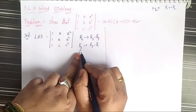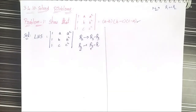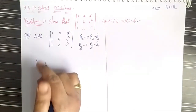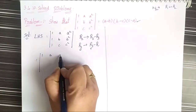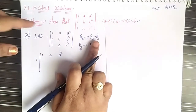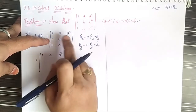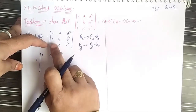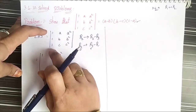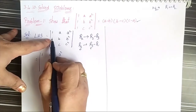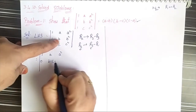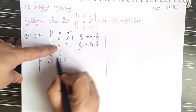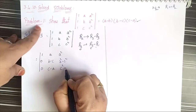The row being operated appears first in the result. The first row has no operations, so it remains (1, a, a²). For R2 minus R3: corresponding elements are subtracted, giving (1 minus 1, b minus c, b² minus c²), which is (0, b minus c, b² minus c²). For R3 minus R1: (0, c minus a, c² minus a²).